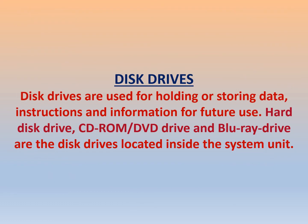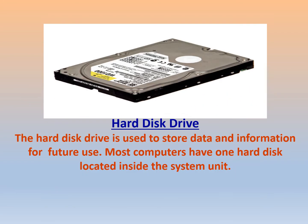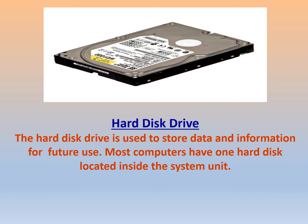Now let us study about disk drives. Disk drives are used for holding or storing data, instructions, and information for future use. Hard disk drive, CD-ROM, DVD drive, and Blu-ray drive are the disk drives located inside the system unit. The hard disk drive is used to store data and information for future use. It is located inside the CPU, and most computers have one hard disk located inside the system unit.